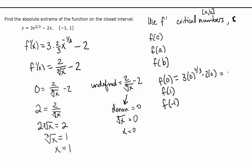f of 1. So f of 1 is 3 times 1 to the 2/3 minus 2 times 1. So that's just going to be 1. And then f of negative 1 is going to be 3 times negative 1 to the 2/3 minus 2 times negative 1, which is going to be, let's see, this is positive, so 3 plus 2 is 5.